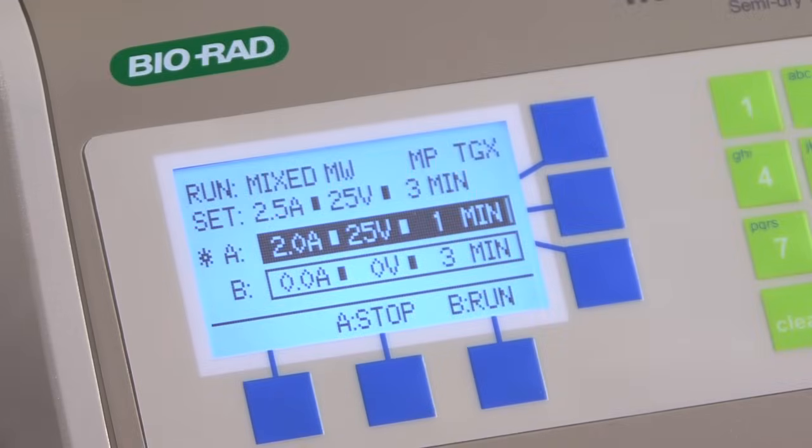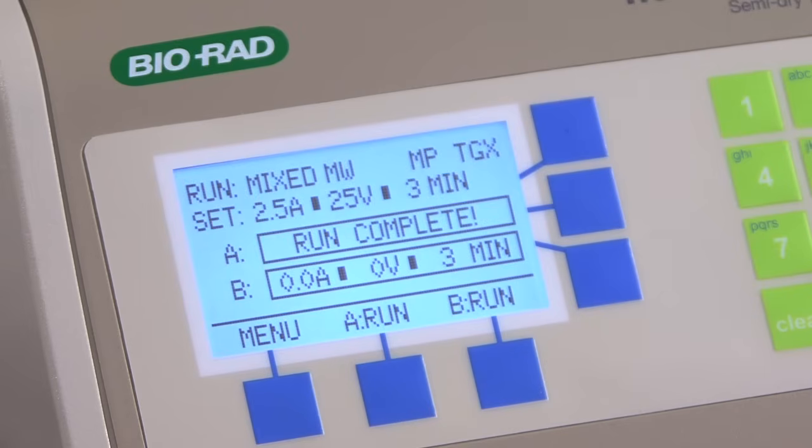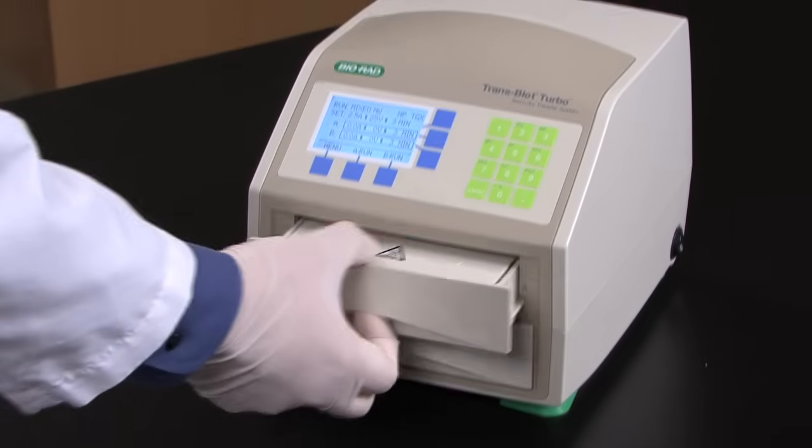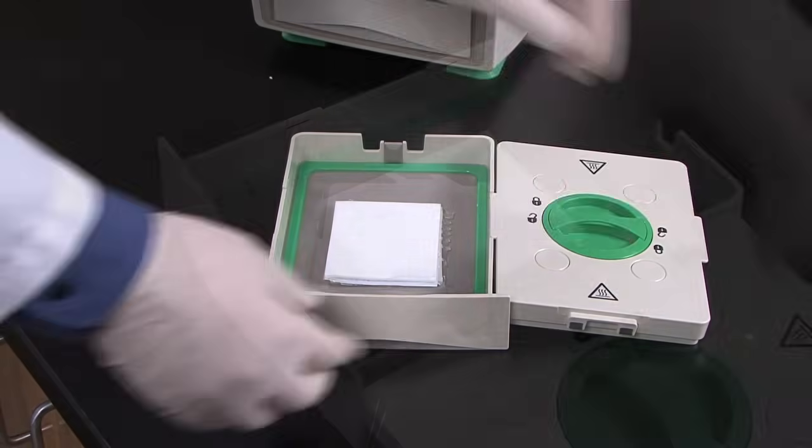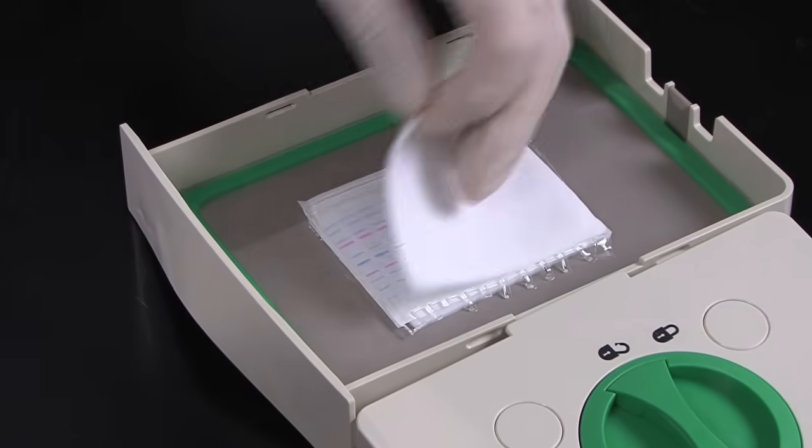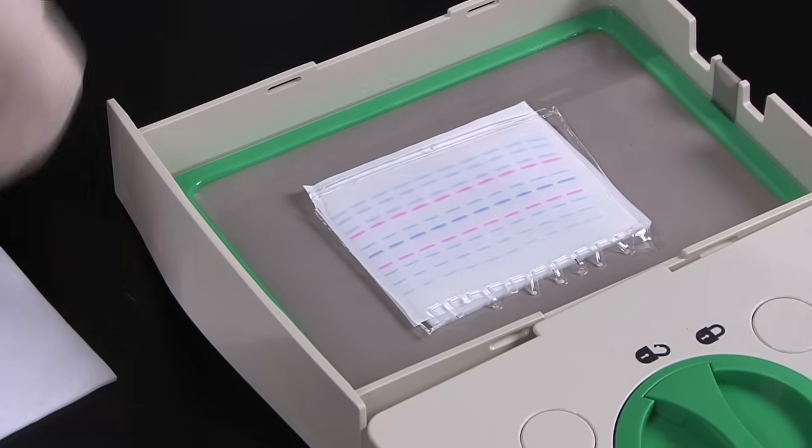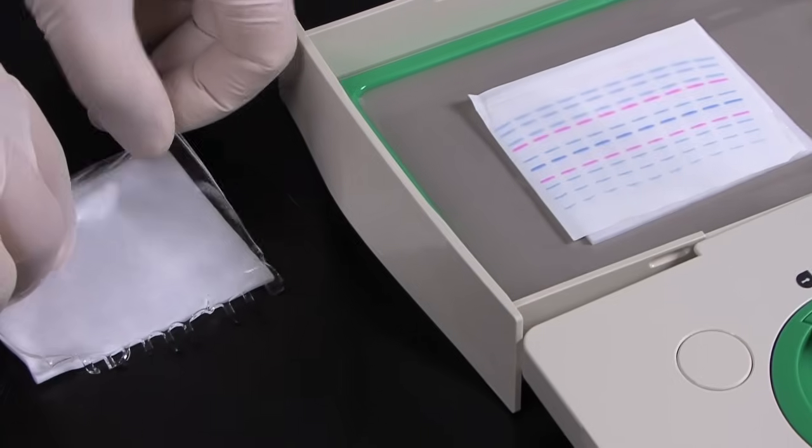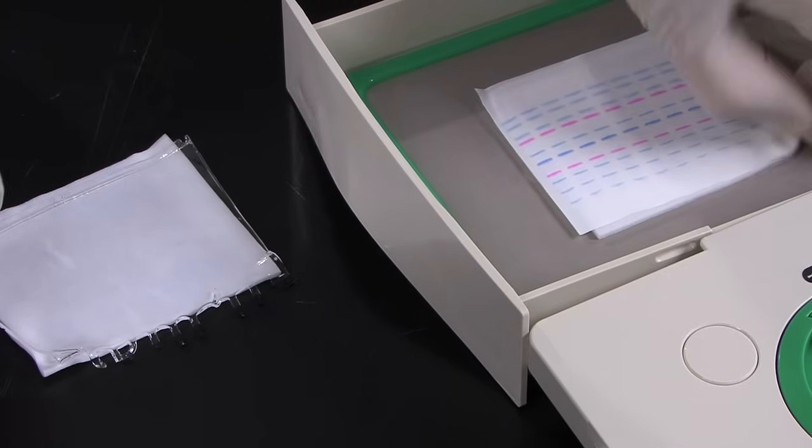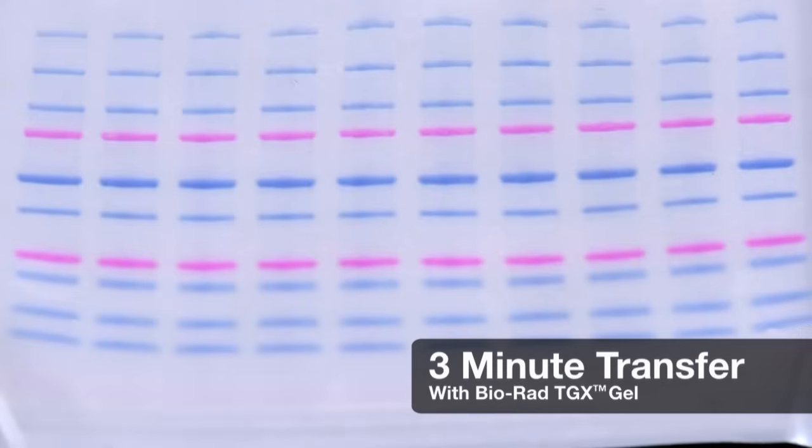After the run is complete, the unit will emit a beep, and Run Complete will be displayed on the LCD screen. The blot does not have to be taken out immediately, though we do recommend proceeding with blot detection as soon as is convenient. Once the transfer is complete, the cassette can be removed from the unit and opened. First, remove the top stack and reveal the transferred blot. Even with the run time as short as 3 minutes, the trans-blot turbo produces excellent results.